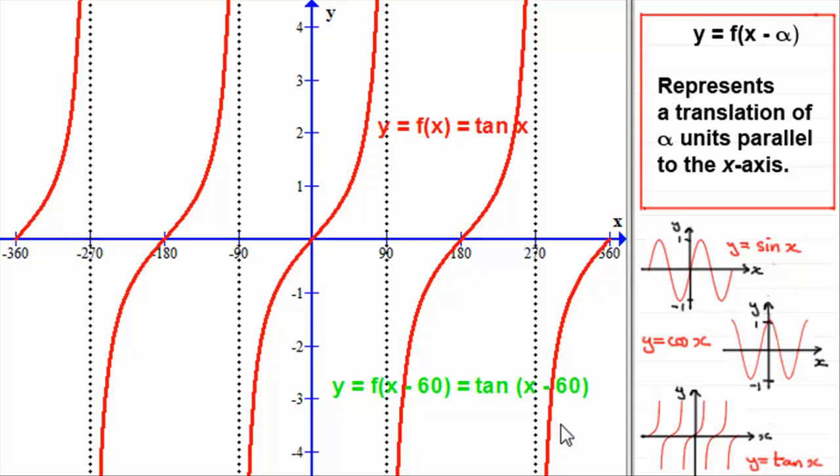Let's see how you got on. When we compare x minus 60 with what we have, you can see that alpha is 60. That means the graph of tan x has to shift 60 degrees to the right. It might be worth splitting up these intervals into 30-degree intervals.